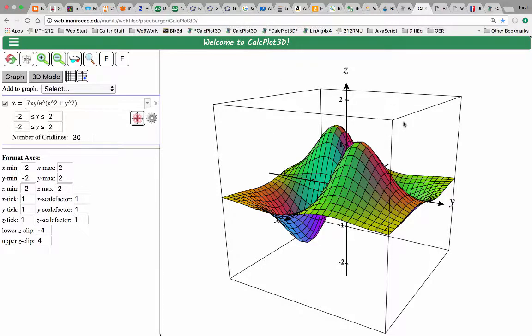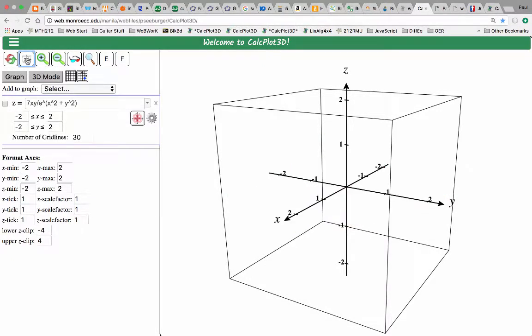To begin with, once you're into CalcPlot 3D, we're going to clear the view. So we'll click this button up here that clears the plot. Next, we're going to go to Add to Graph and select Space Curve.